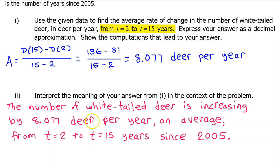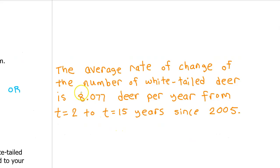I think that's the best interpretation in the context of the problem. But here is another way to say it. The average rate of change of the number of white-tailed deer is 8.077 deer per year from t equals 2 to t equals 15 years since 2005.